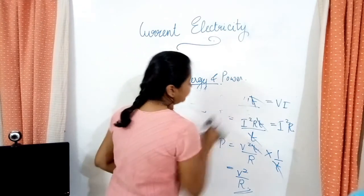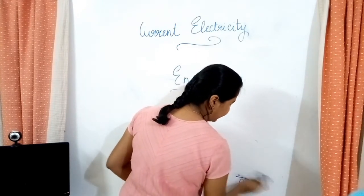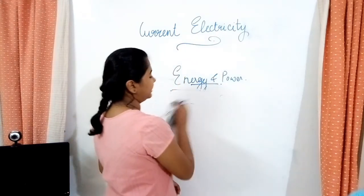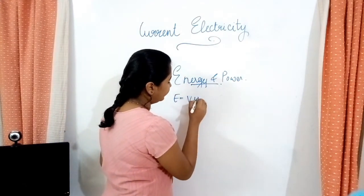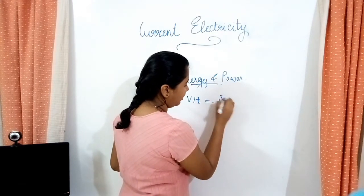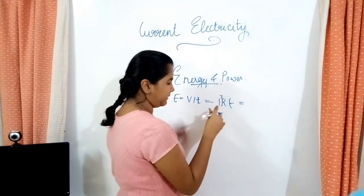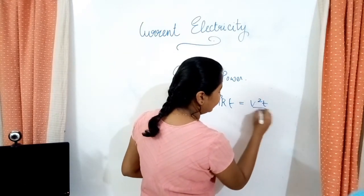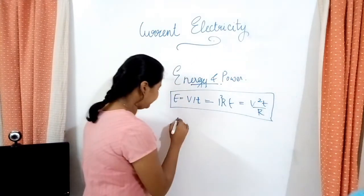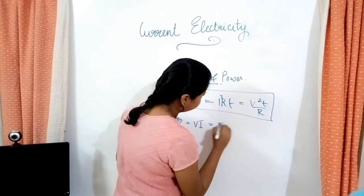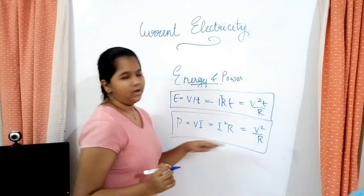So let's write out the equations we've learned. For energy: E = VIT = I²RT = V²T/R. For power: P = VI = I²R = V²/R.